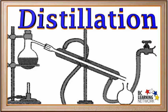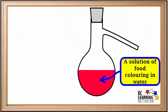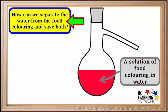One of the methods for separating mixtures is distillation. Imagine we have a solution of red food coloring in water. Let's say we want to separate the water from the food coloring and save both of them.